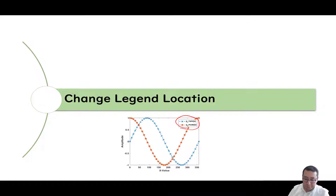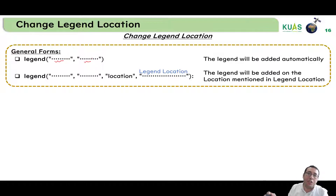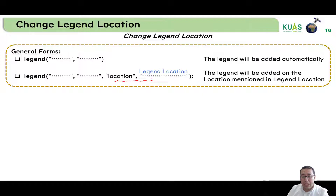In the general form, the legend function takes the label for each figure in order. By default, the legend appears on the northeast side, and in many cases it overlaps the figure. We need to adjust the location by adding the location parameter to decide where the legend should appear.